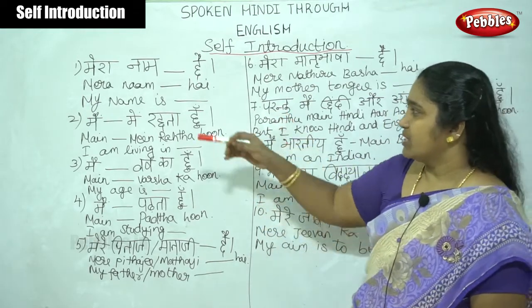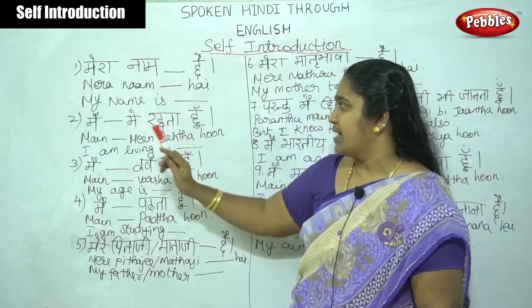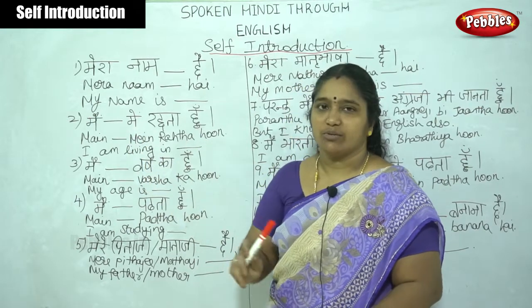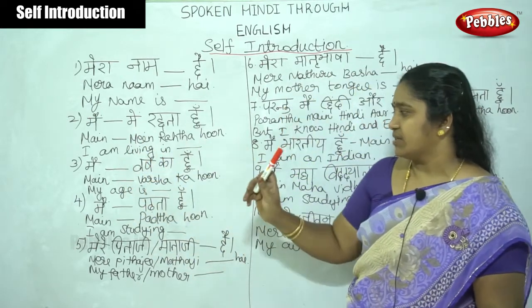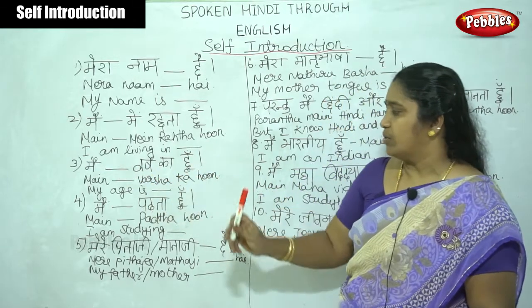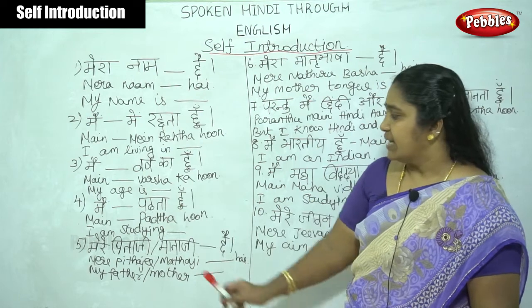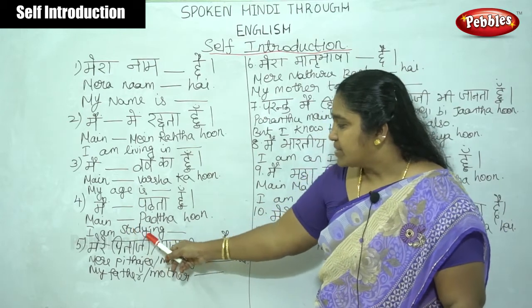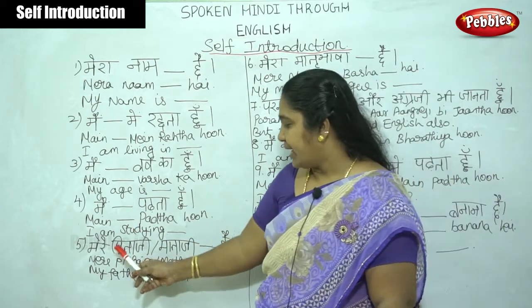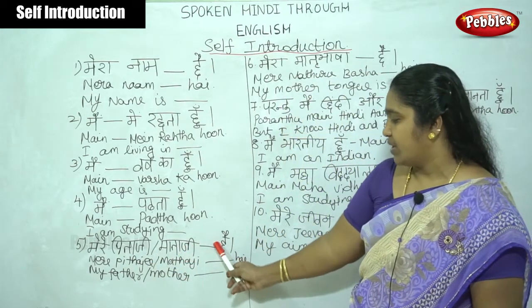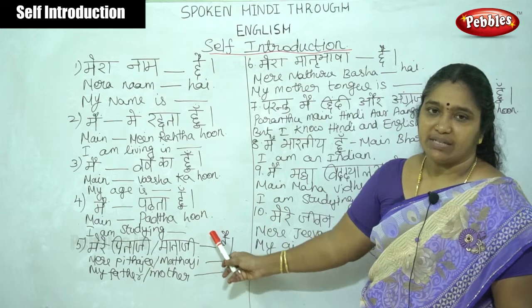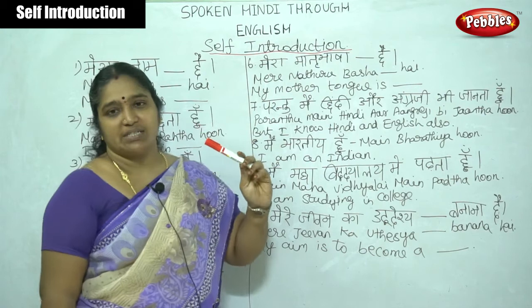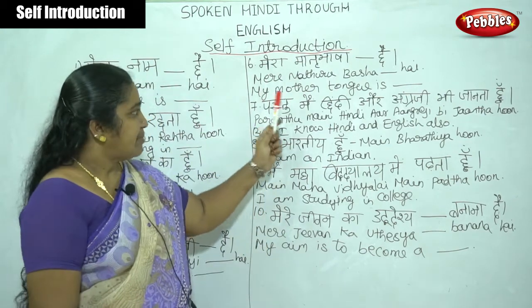To summarize the steps: Step 1 — 'Mera naam dash hai' (My name is dash). Step 2 — 'Mai dash me rehti hoon' (I am living in dash). Step 3 — 'Mai dash varsha ki hoon' (My age is dash). Step 4 — 'Mai dash padti hoon' (I am studying dash). Step 5 — 'Mere pitaji aur mataji ka naam dash hai' (write the name of your father and mother). Step 6 — 'Mera matrubhasha dash hai' (write your mother tongue).